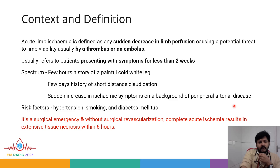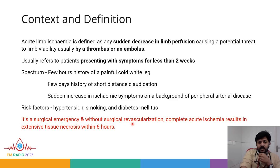The risk factors include hypertension, smoking, and diabetes mellitus. Acute limb ischemia is a surgical emergency, and without surgical revascularization, complete acute ischemia results in extensive tissue necrosis within six hours.